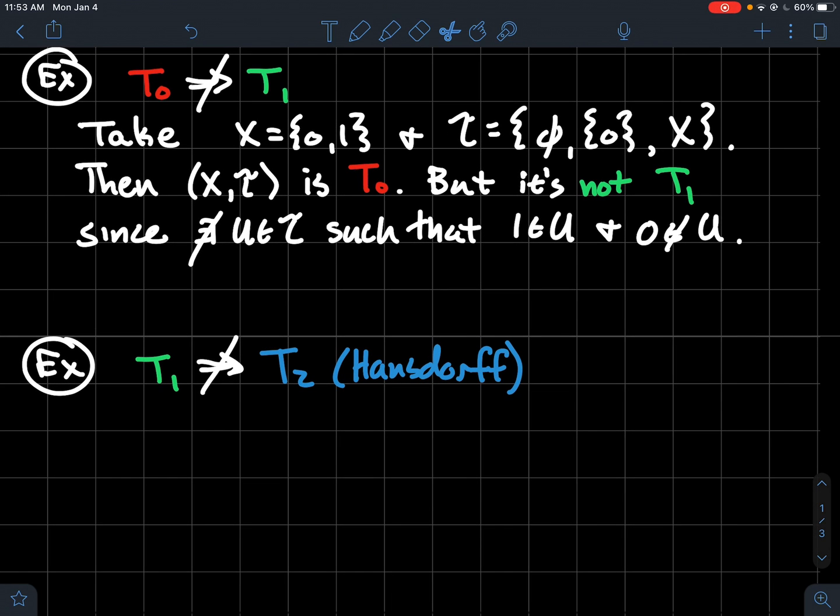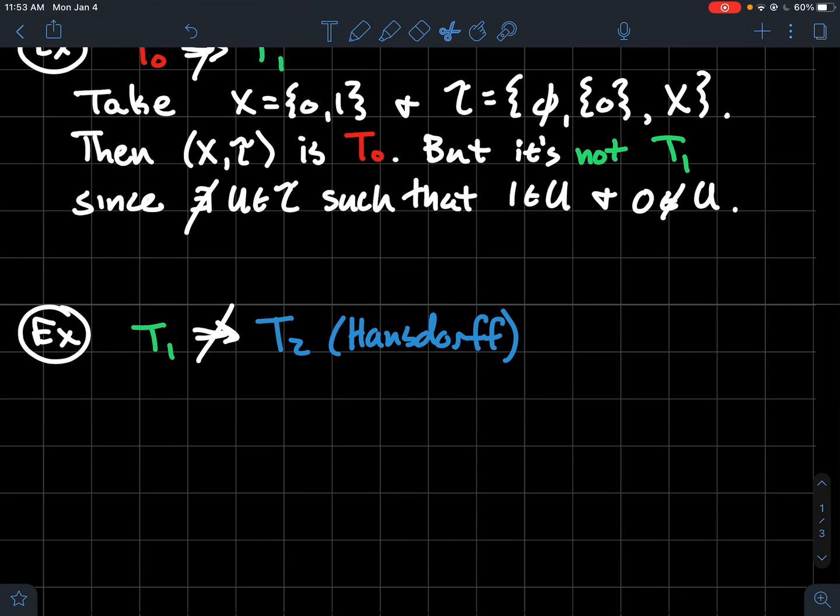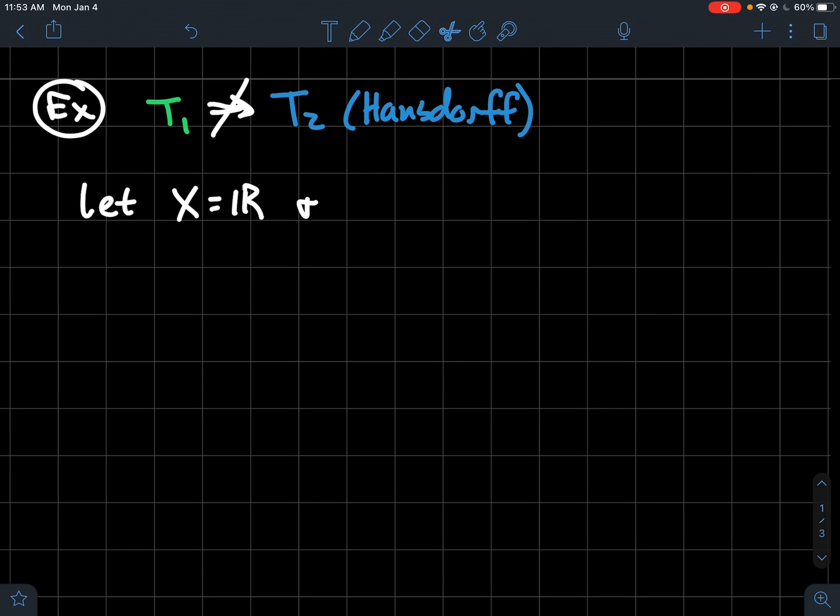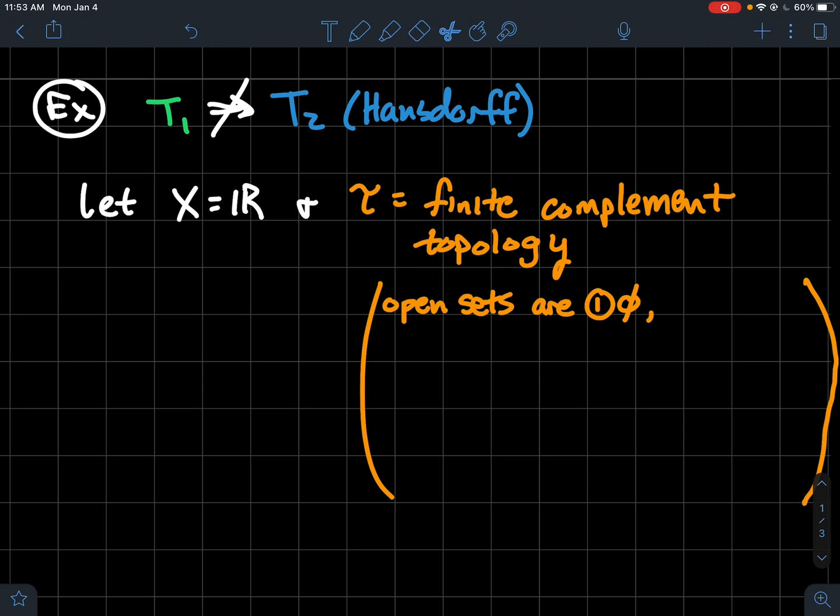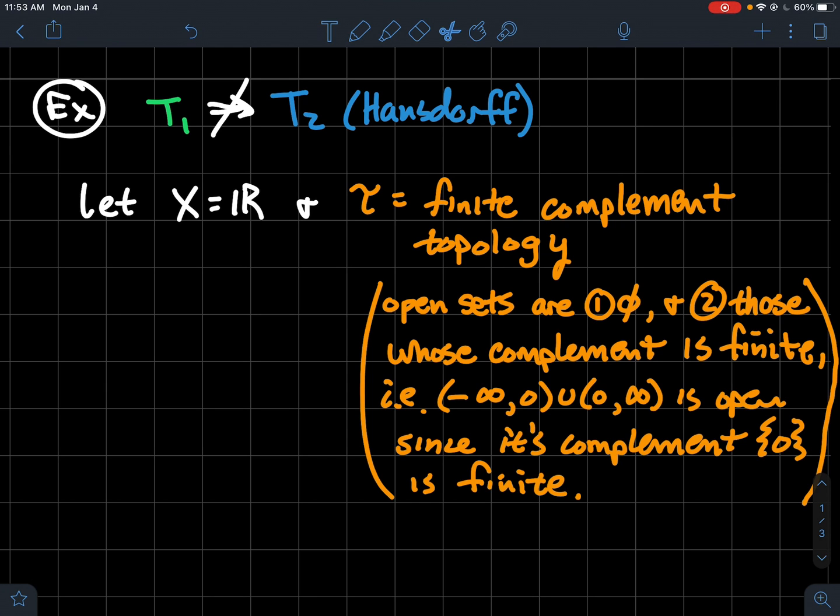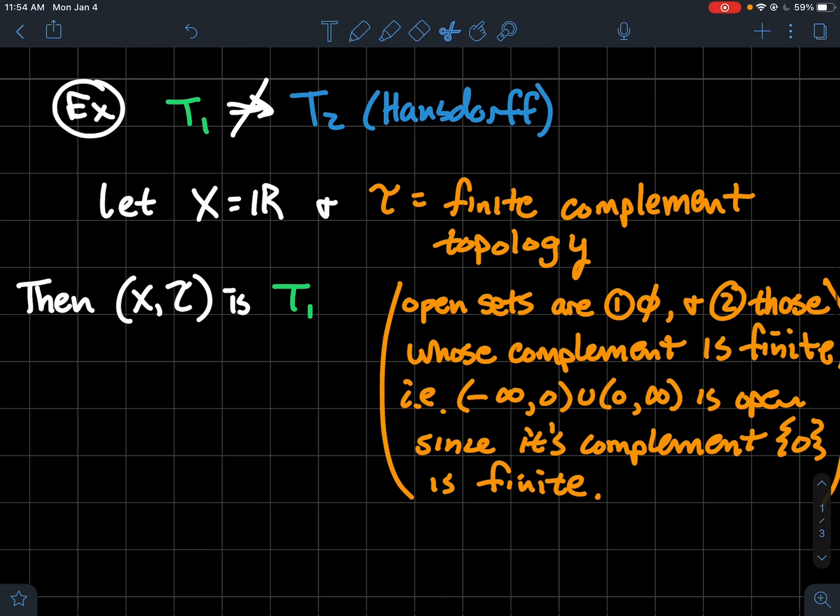The next thing we're going to look at, the last thing, is how come T1 does not necessarily imply Hausdorff or T2. And so in this case, let's let X be the real line. And let's let the topology be the finite complement topology. If you've never heard of this before, what is it? So the open sets are the following. One, the empty set is going to be defined as open. And the other types of open sets are those whose complement is finite. And what do I mean by that? Let me give you a little example. If you think about the interval from minus infinity to 0, union 0 to infinity, that is an open set. That would be an element of this topology because the complement of that interval is the point that it missed, it's 0. And so I'm just saying if the complement just contains a finite number of points, in my case, the complement just has one point here, then that's going to be an open set here. So think about, you've got intervals, maybe you're plucking points out of them. What you're left with would be an open set.